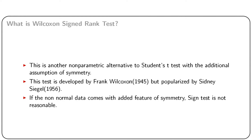We have already discussed sign test as a non-parametric competitor of Student's t-test. Some properties including small sample and large sample are discussed. But sign test only uses the sign of the differences and hence utilizes only partial information contained in the data. Now, we shall discuss another competitor of t-test, namely, Wilcoxon signed rank test.